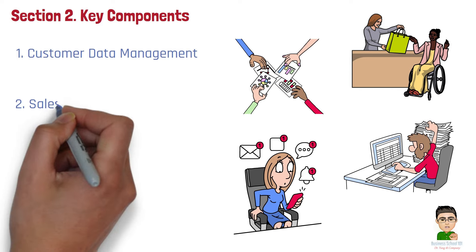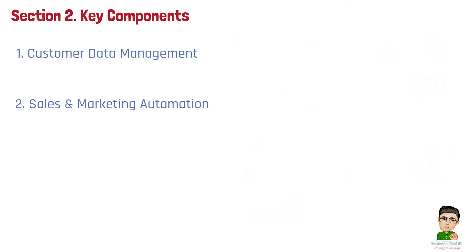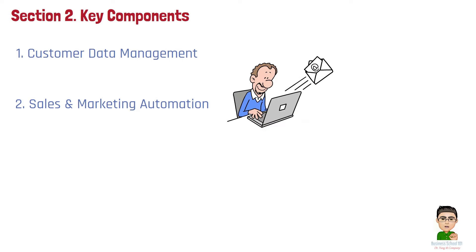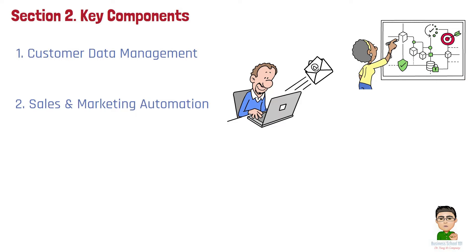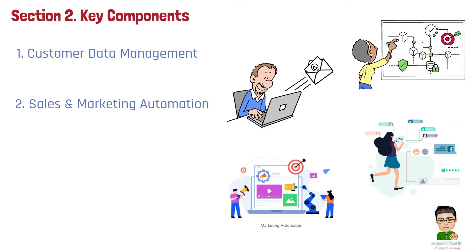Number 2: Sales and Marketing Automation. CRM automates sales and marketing tasks, such as sending follow-up emails, generating leads, and tracking customer interactions. With automated workflows, teams can focus more on building relationships and less on administrative tasks. Automated marketing campaigns can also be personalized based on customer data, helping businesses engage customers at the right time with the right message.